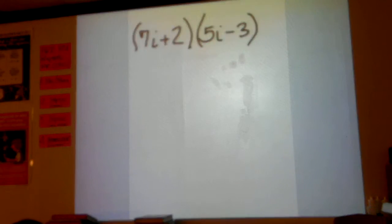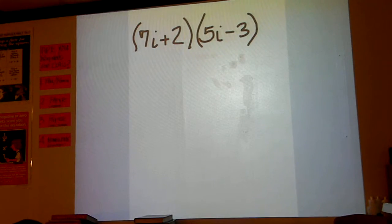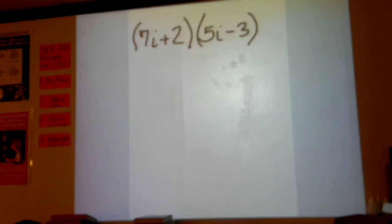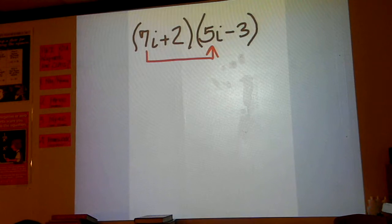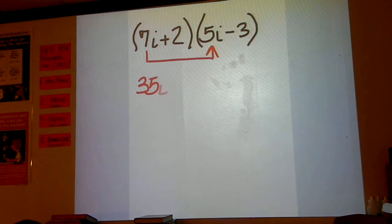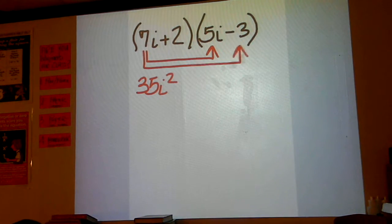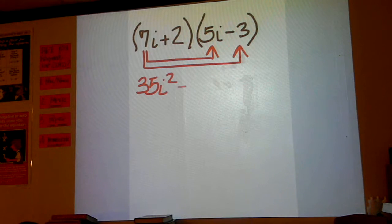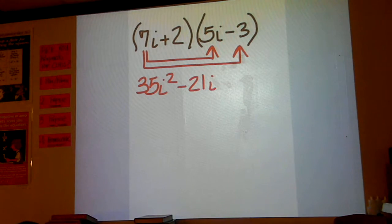We will start off with 7i times 5i, which is 35i squared. And then 7i times minus 3 would be minus 21i.